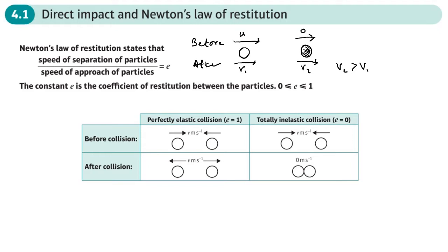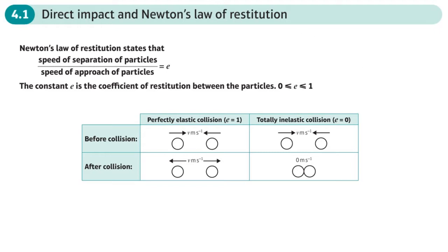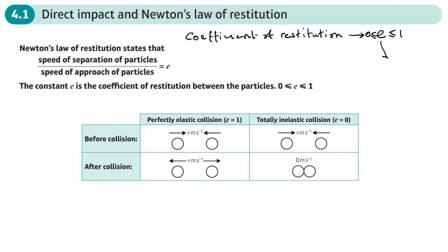It wouldn't work otherwise. So we do have a coefficient linked to the speed at which these two objects collide and the speed at which they separate — it's called the coefficient of restitution. The letter we use for it is e, and its value is between zero and one.